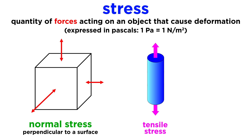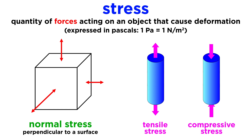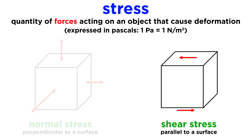If a force pulls on an object in an outward direction, causing the object to stretch, that is called tensile stress. Conversely, if a force pushes inward on an object, causing it to squash, that is called compressive stress. Both compressive and tensile stresses are normal stresses. Forces that act parallel to a surface are called shear stress.